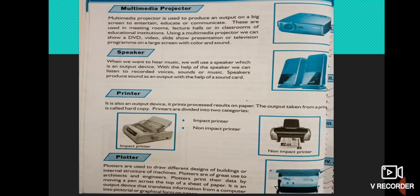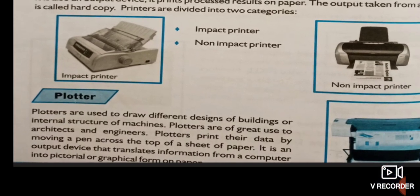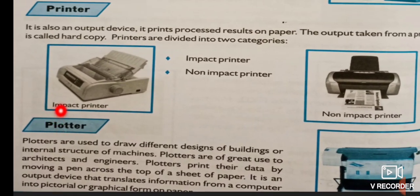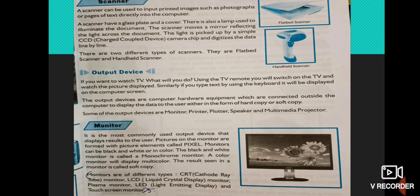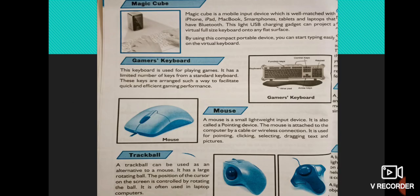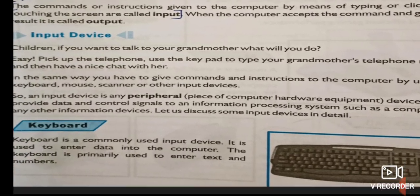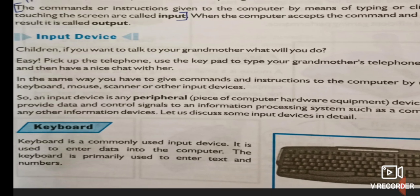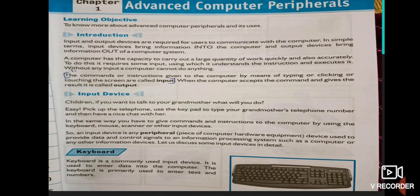So the output devices we discussed are: Monitor, Multimedia Projector, Speaker, Printer, and Plotter. This concludes your first chapter, which is mainly about input devices and output devices. Peripheral devices means whatever devices can be attached to a computer system. These are the things you have learnt from Chapter One — Advanced Computer Peripherals.